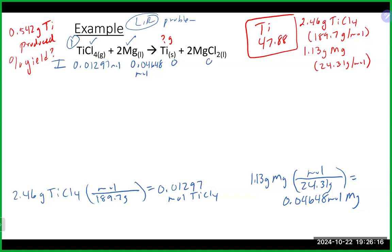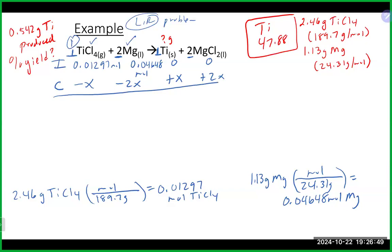We put those into our ICE table. Initially, TiCl₄ is 0.01297 moles, magnesium is 0.04648 moles, and products start at zero. For the change row, reactants are negative: TiCl₄ has a coefficient of 1, so it's minus x; magnesium has a coefficient of 2, so it's minus 2x. On the product side, Ti is plus x and MgCl₂ is plus 2x.